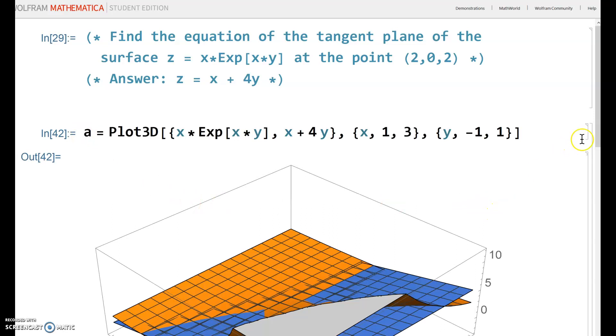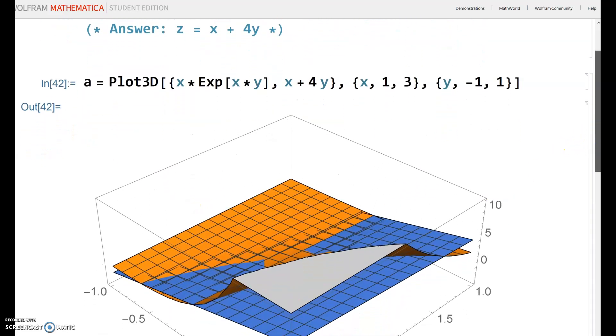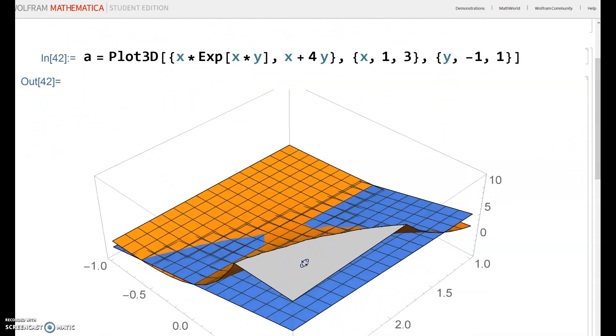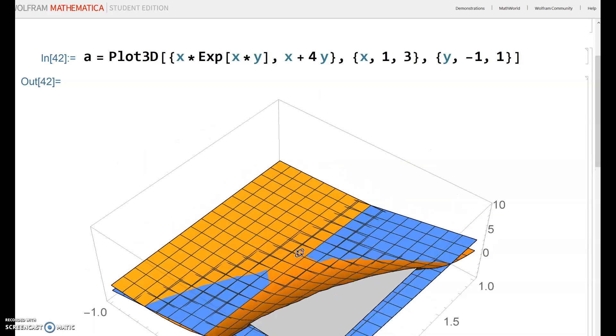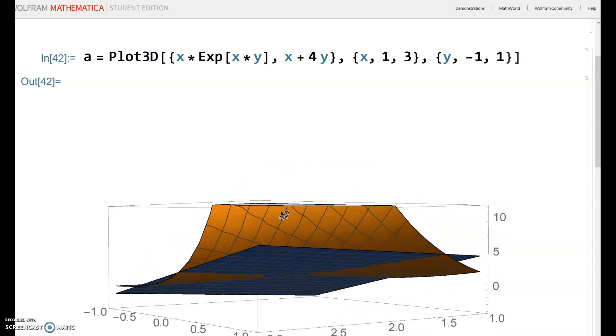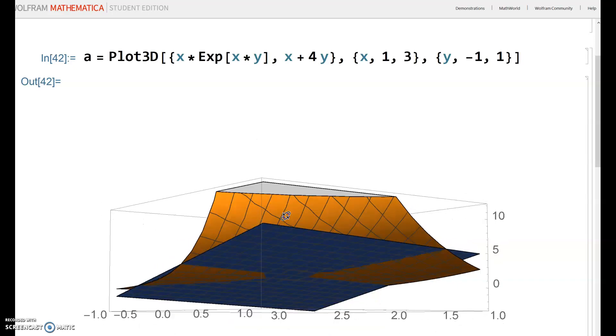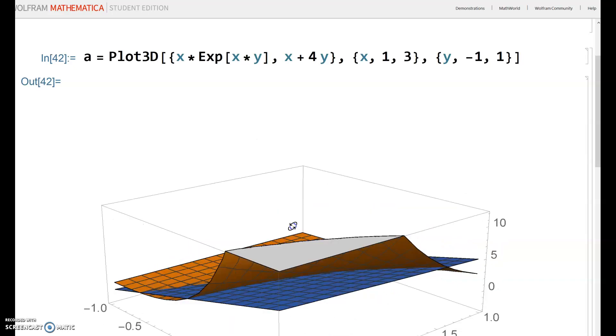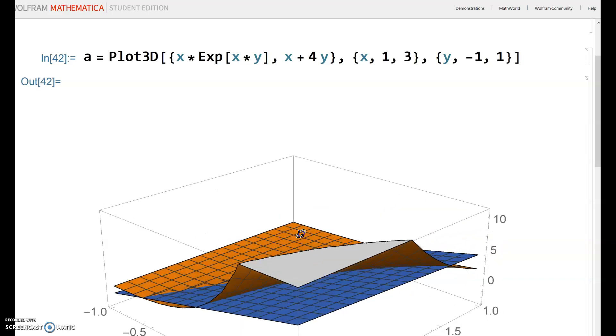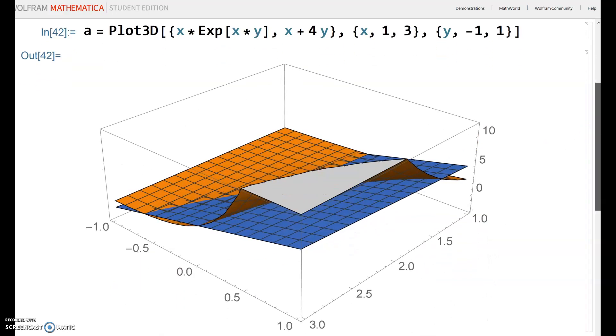Okay, so here we have the surface. Looks like the surface is the orange, and the blue is the tangent plane. And it looks, yeah, it looks somewhat like a tangent plane. It's hard to tell for sure, but it looks somewhat like a tangent plane.